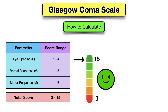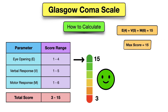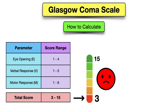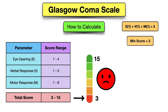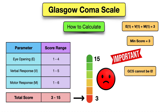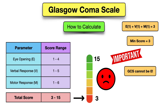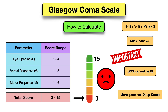The highest GCS score is 15, which is four points for the eyes, five for verbal, and six for motor — four plus five plus six gives us 15. A GCS score of 15 is the best maximum score, meaning the patient is fully awake and responsive. The lowest possible score is three — one point for eyes, one for verbal, and one for motor. You cannot have a GCS score of zero. A GCS of three means the patient is unresponsive and indicates a severe brain injury or deep coma.